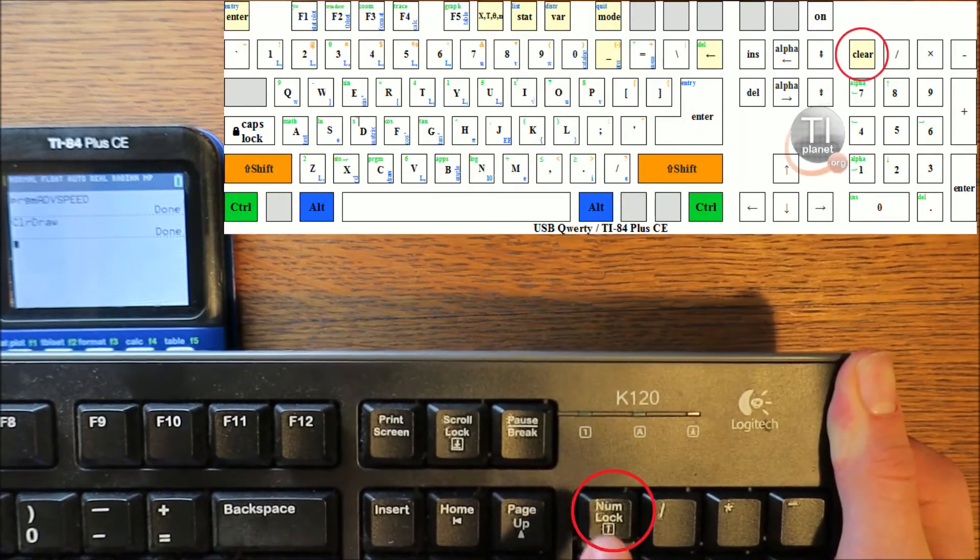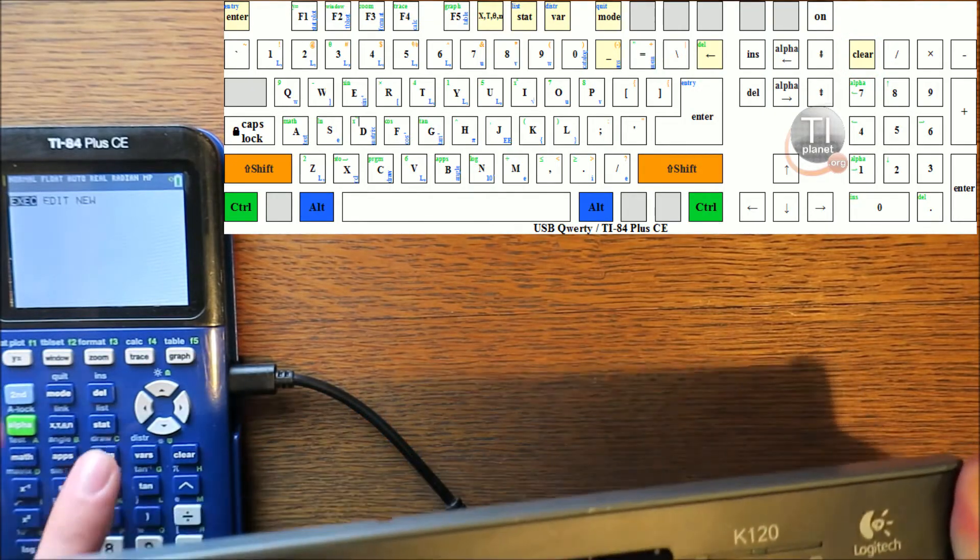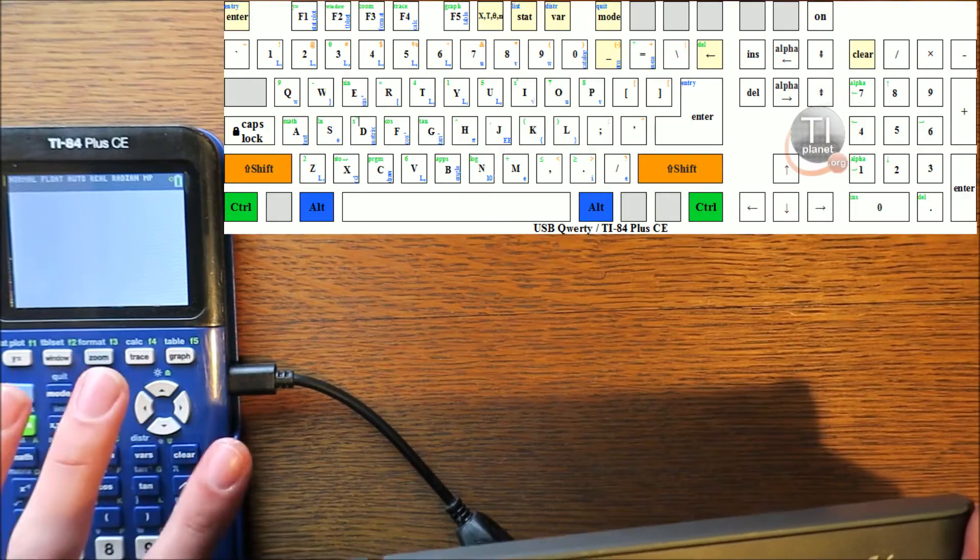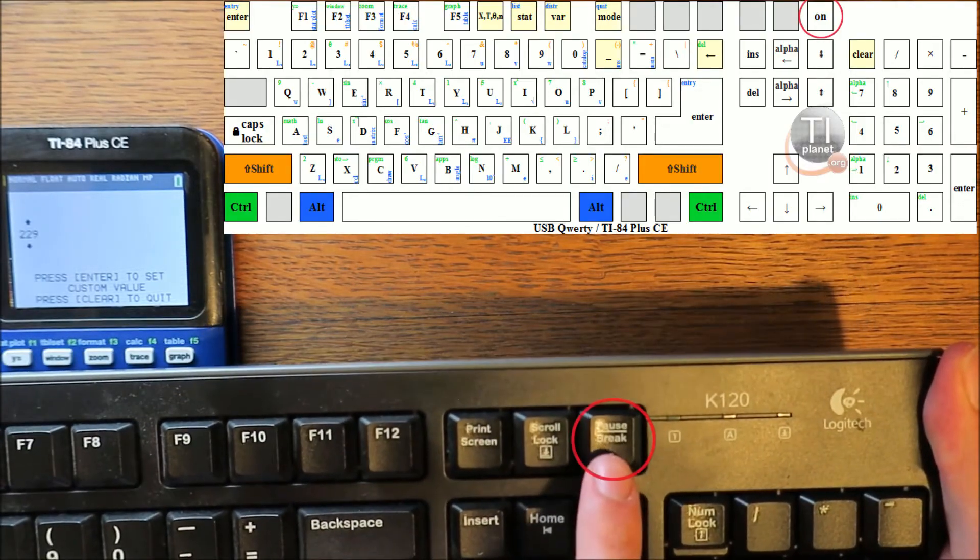I'll tell you two other good keys to know. The numlock key is the clear button, and the pause break key acts like the on button. However, the pause break key can't turn on or off your calculator. It can only break out of programs and operations you want to quit.